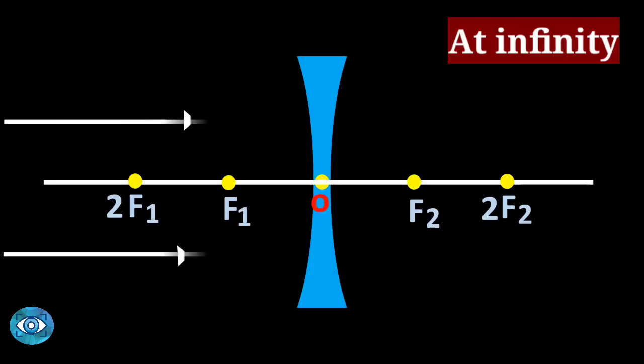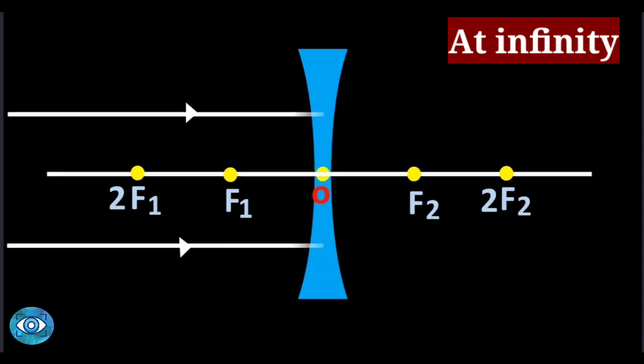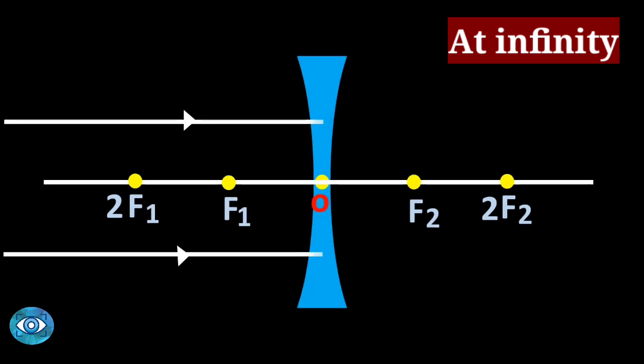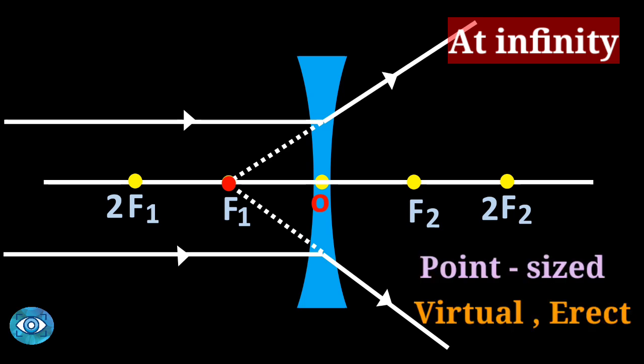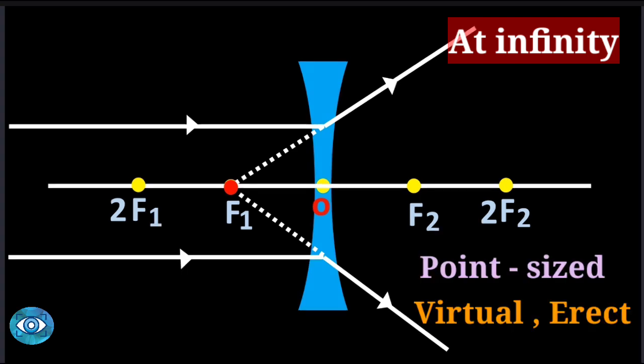Case one for concave lens: when the object is at infinity, we consider parallel rays. After refraction, the light rays appear to be coming from the focus, so the image is formed at the focus. The image is highly diminished and point-sized.